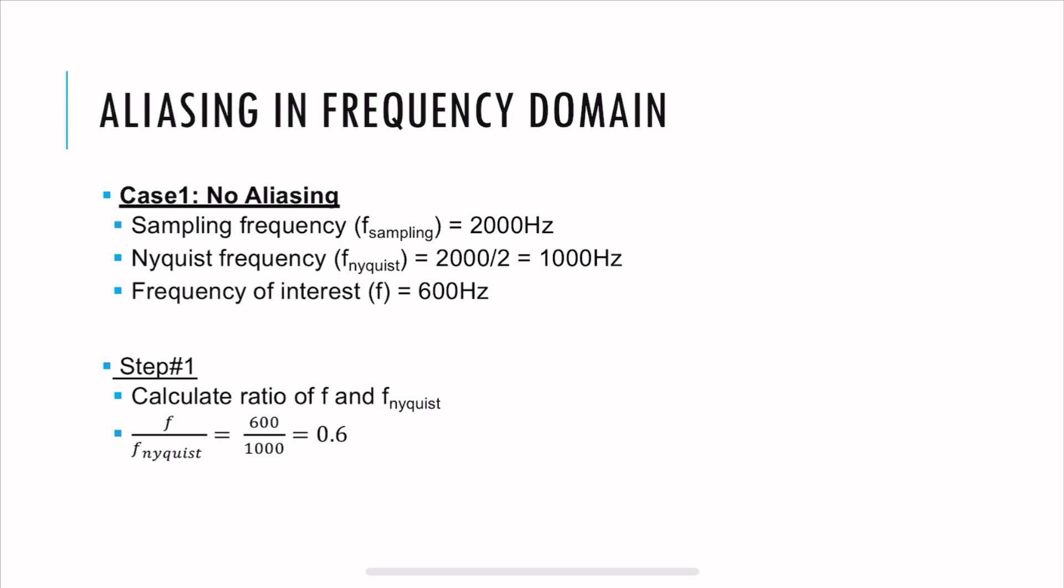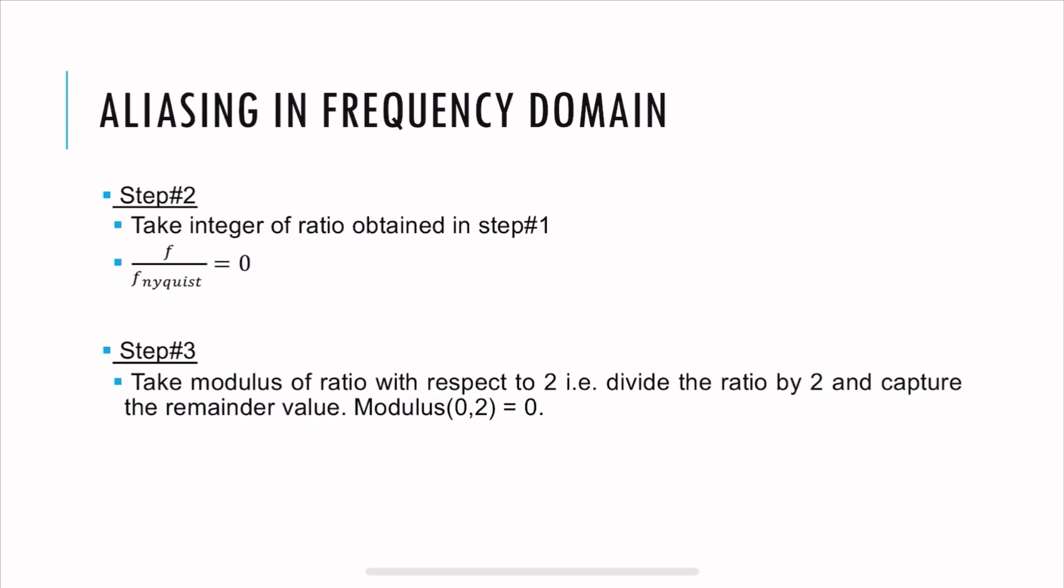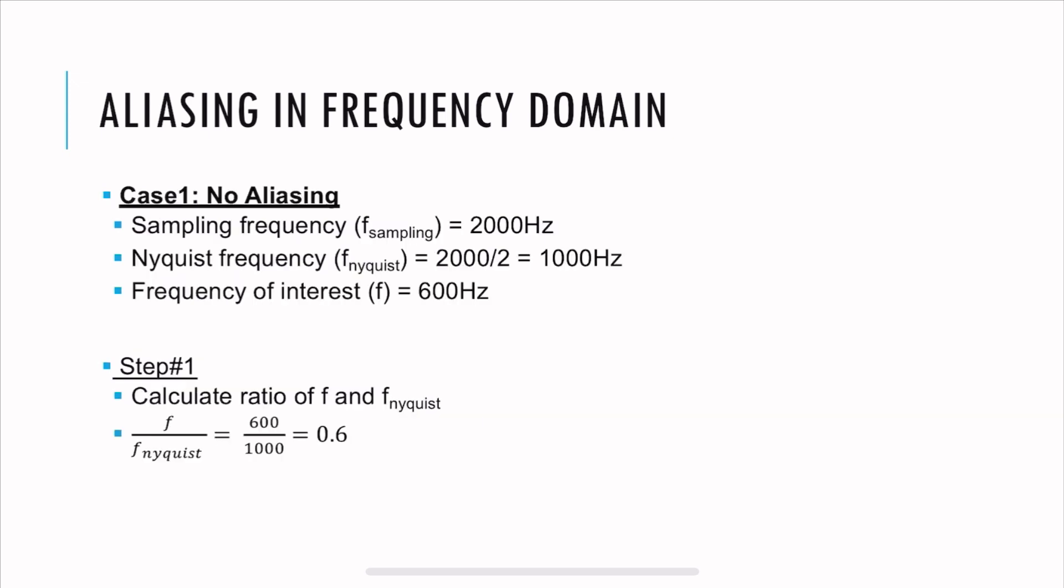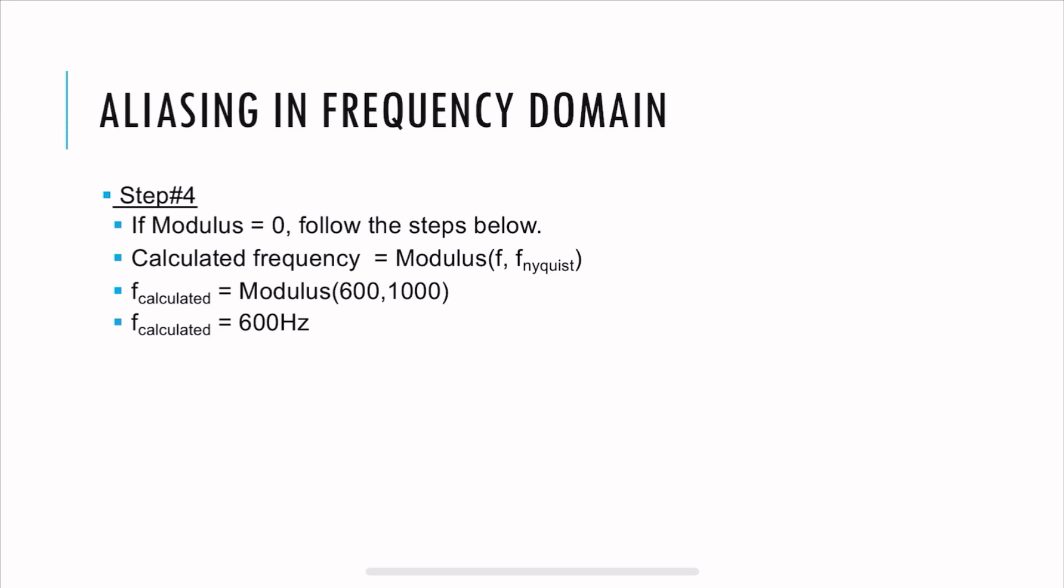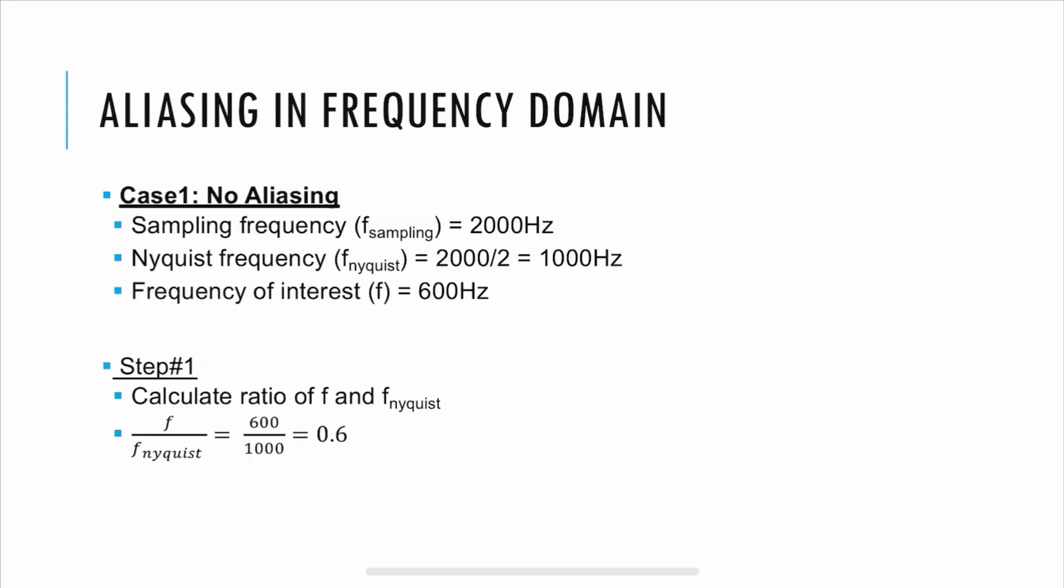But let's look at the math anyway. So first, we take the ratio of f over f_Nyquist. So that is 600 over 1000, that is 0.6. Next, we take the integer of the ratio obtained in step 1. So now we have 0.6. And if we want to take an integer, it's going to be 0. The next step is to take the modulus of ratio with respect to 2. That is, you divide the number 0 by 2 and capture the remainder value. We call this modulus. Modulus of 0 over 2 is 0 because the remainder is 0. Now, if the modulus is 0 in the previous step, yes, it is 0. So we need to follow the next steps, which is the calculated frequency is modulus of f and f_Nyquist. So we divide 600 by 1000 and take the remainder. And we get the remainder 600 hertz. So the calculated frequency is 600 hertz. Now, if you observe carefully, in this case, aliasing didn't occur and we captured the frequency exactly of our interest.